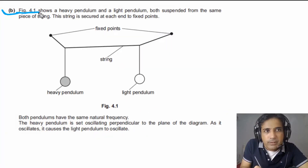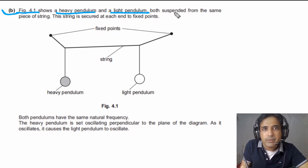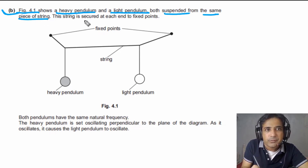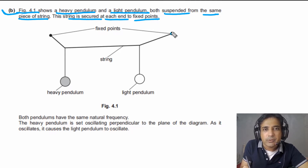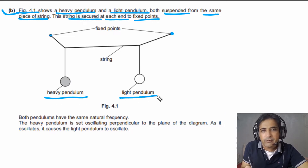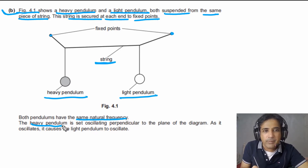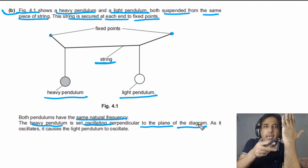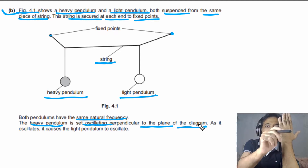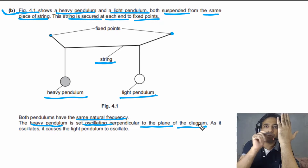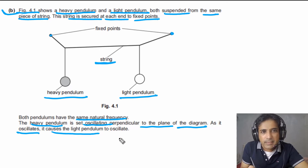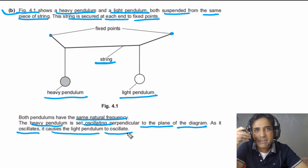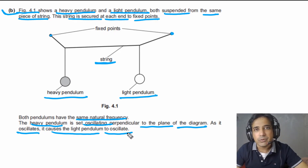For part B, figure 4.1 shows a heavy pendulum and a light pendulum, both suspended from the same piece of string secured at each end to fixed points. Both pendulums have the same natural frequency. The heavy pendulum is set oscillating perpendicular to the plane of the diagram. As it oscillates, it causes the light pendulum to oscillate as well, because they share the same string and have the same natural frequency.